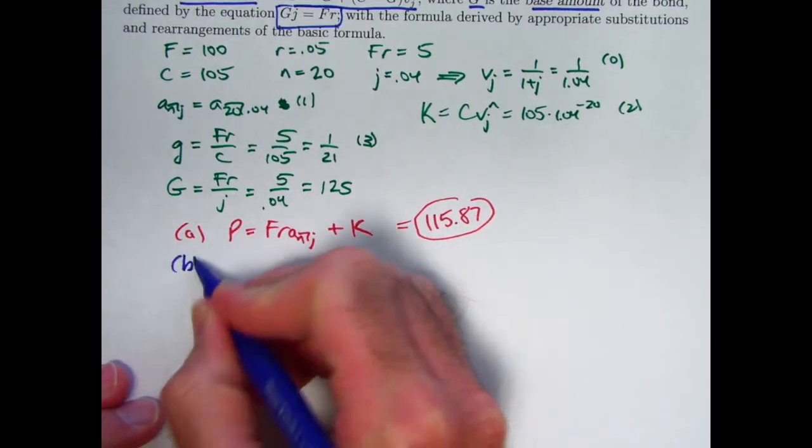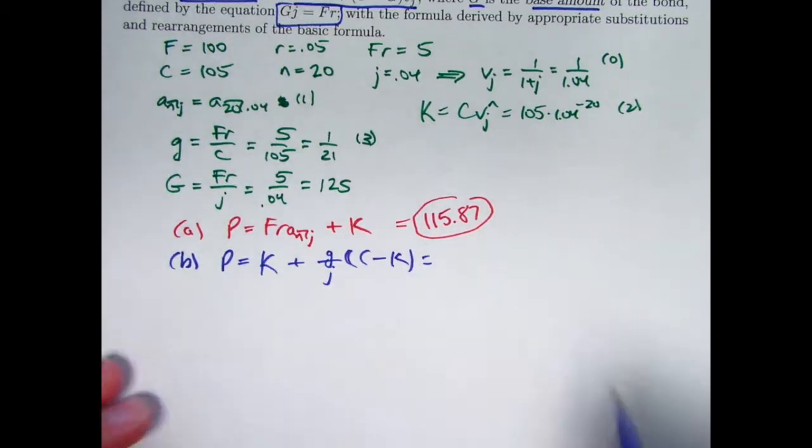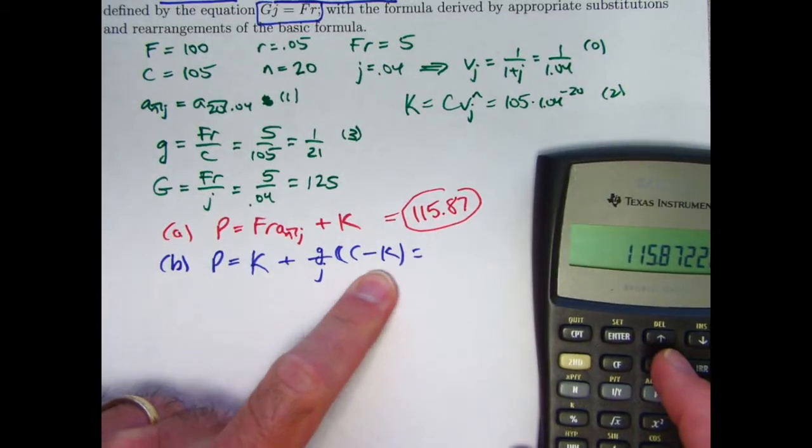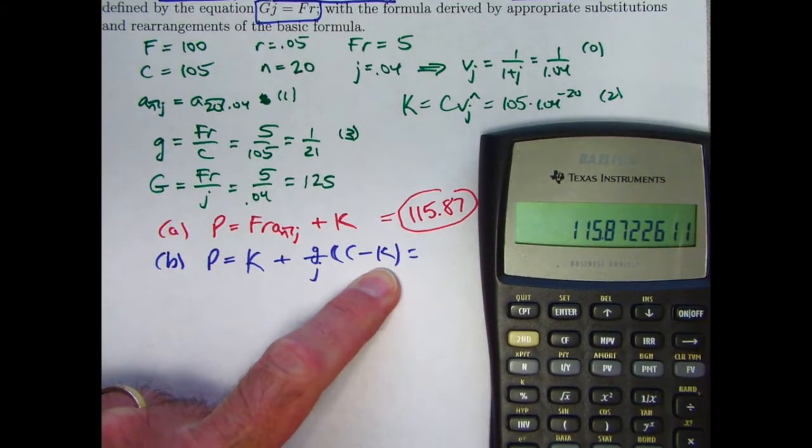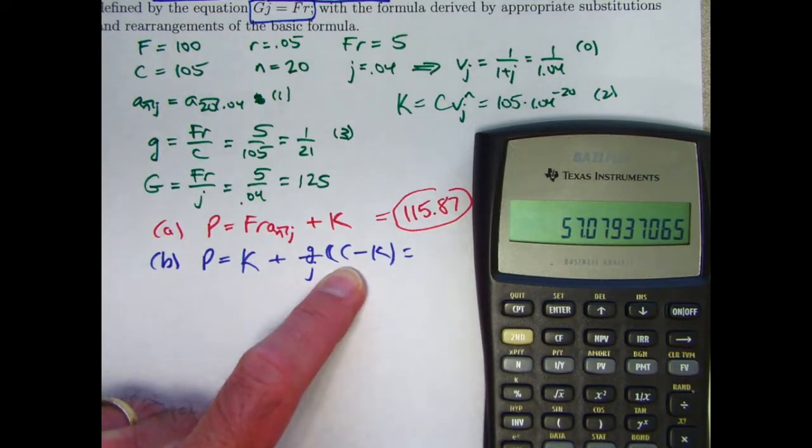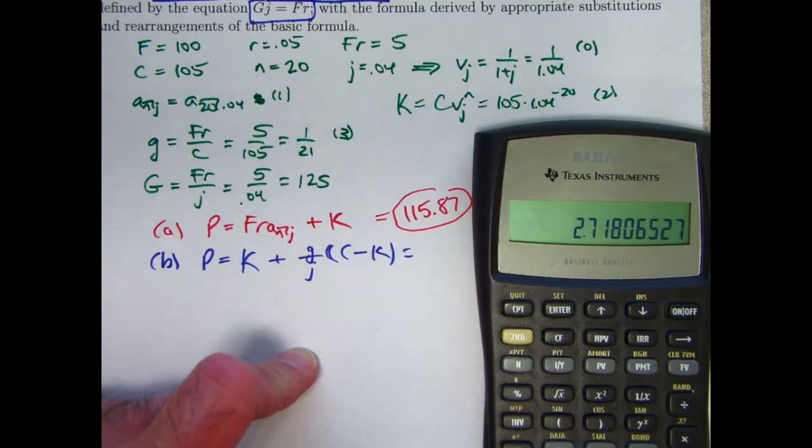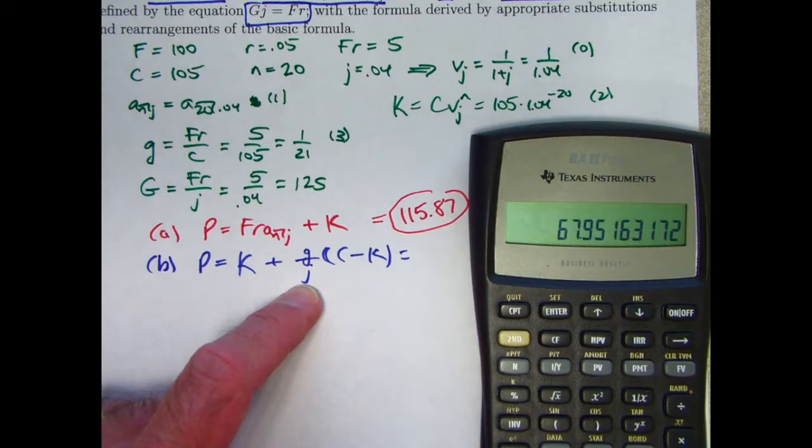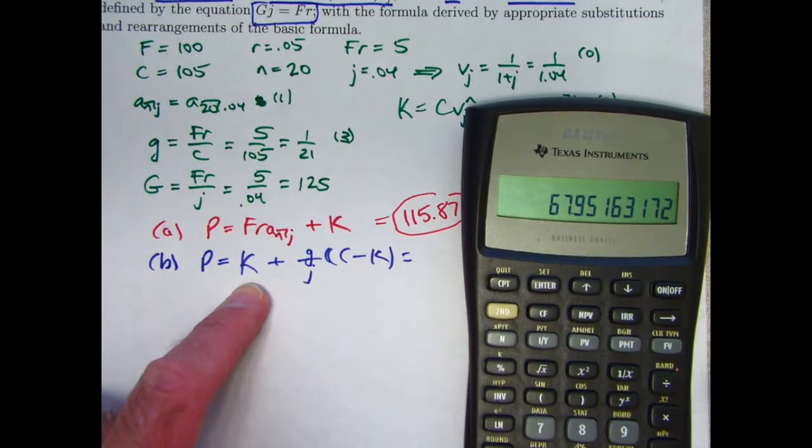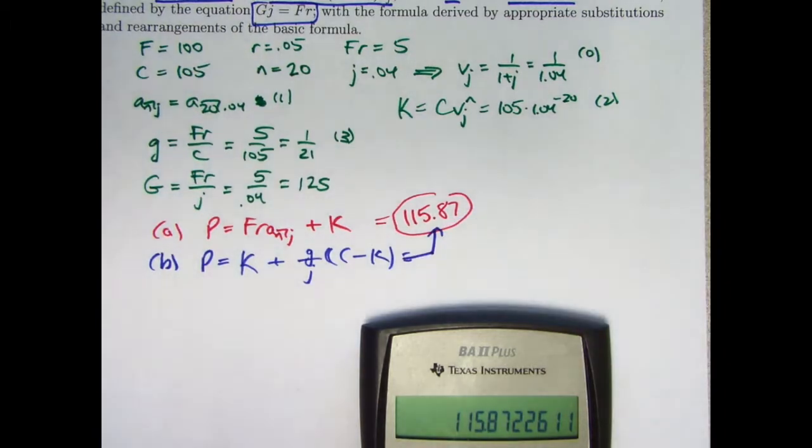Second formula is Makeham's formula. Looks like this. Again, I'm thinking about efficient calculator usage. C is simple. 105. K is not as simple. Let's get K in there first. In register 2. Recall 2. Subtract that from 105. So I'll go negative plus 105. This difference is about 57.08. Multiply by G over J. So I'll multiply by G first, which is in register 3. Times, recall, 3. Divide by J, which is dividing by 0.04. That amount, that thing right there, is the same as the present value of all the coupons. It was the same as this, because I'm just adding K now. Which, again, is in register 2. To get the same answer, 115.87. So we confirm we get the same thing.